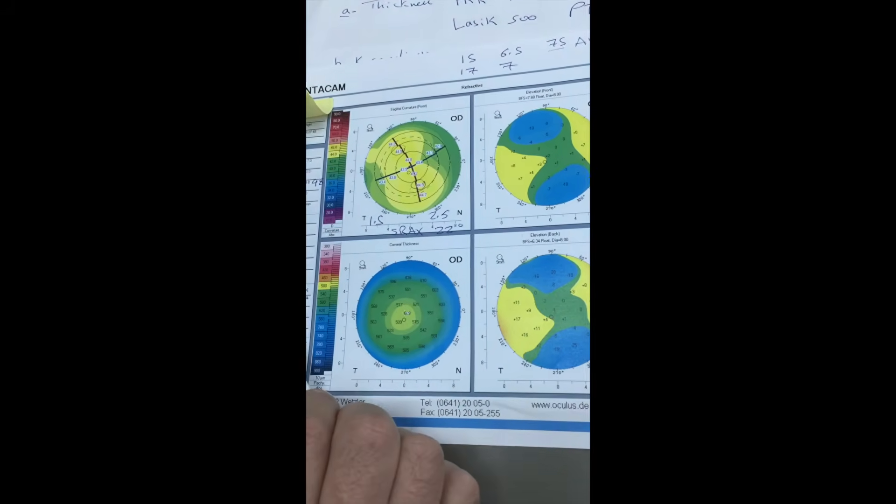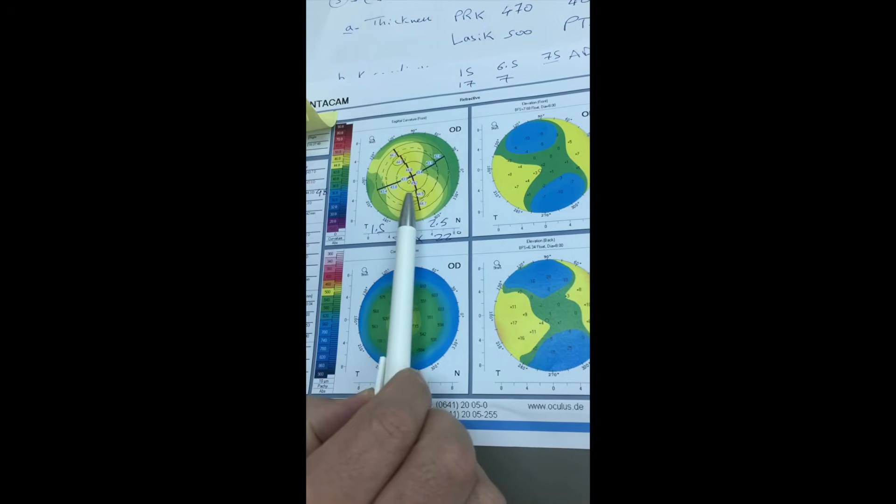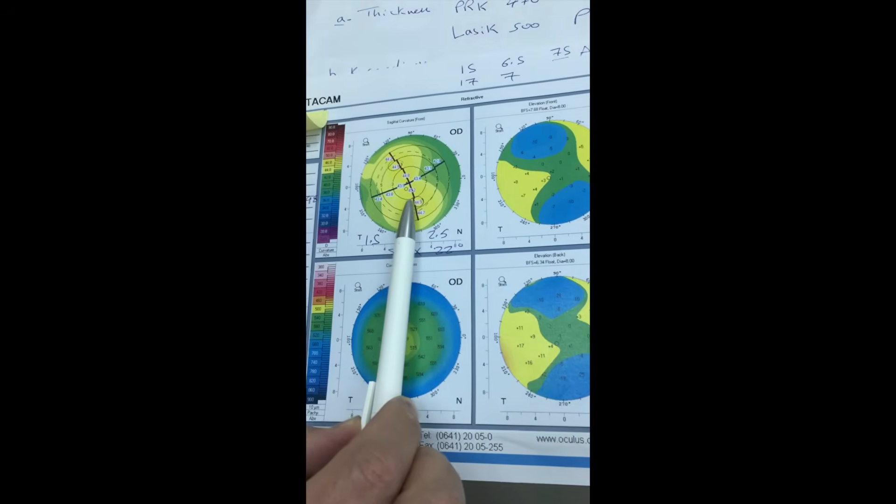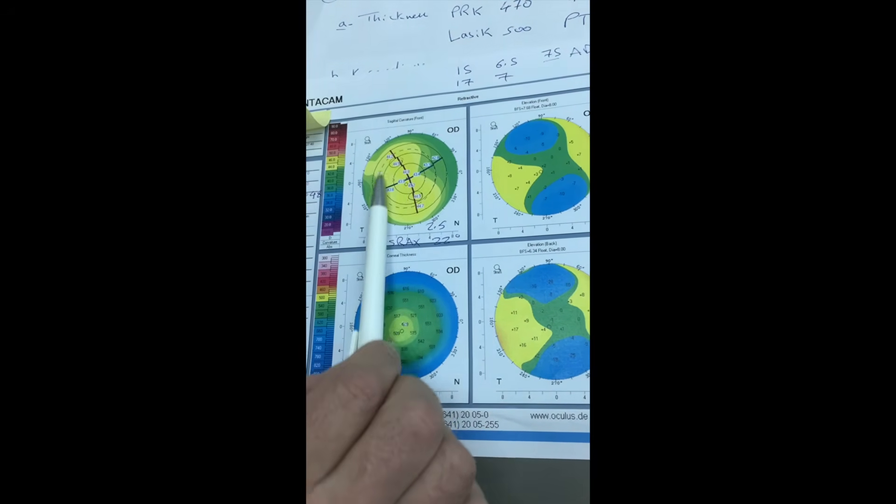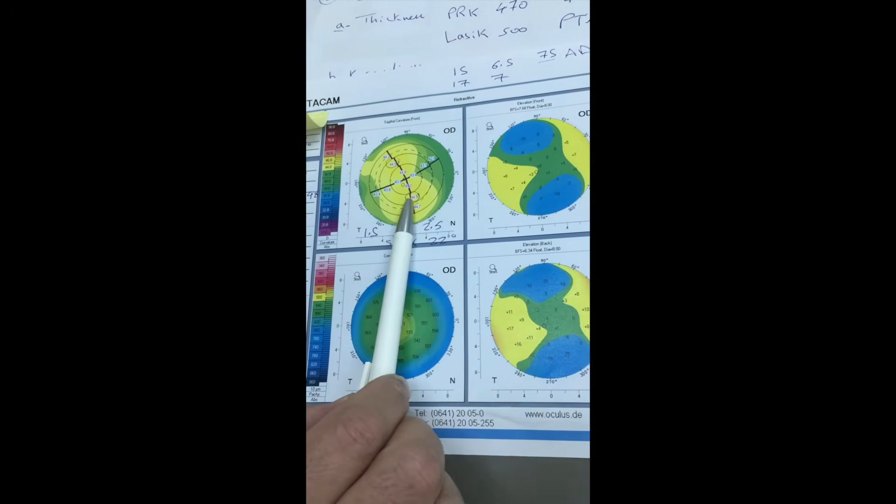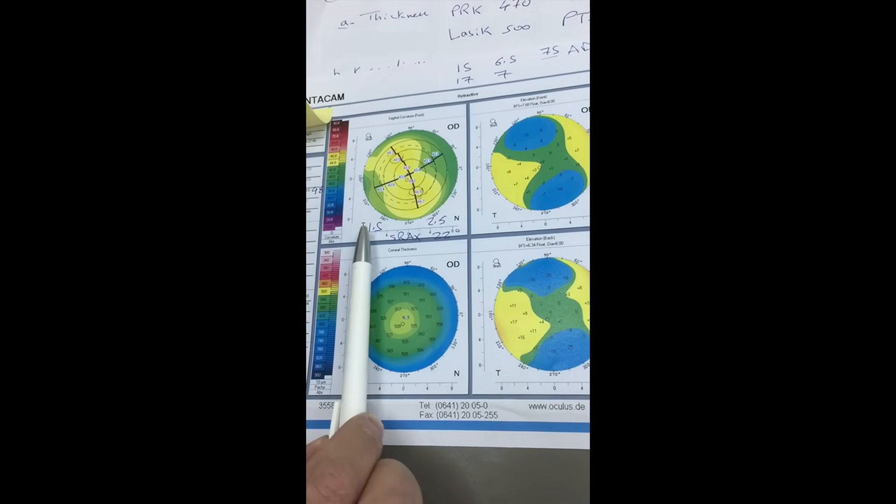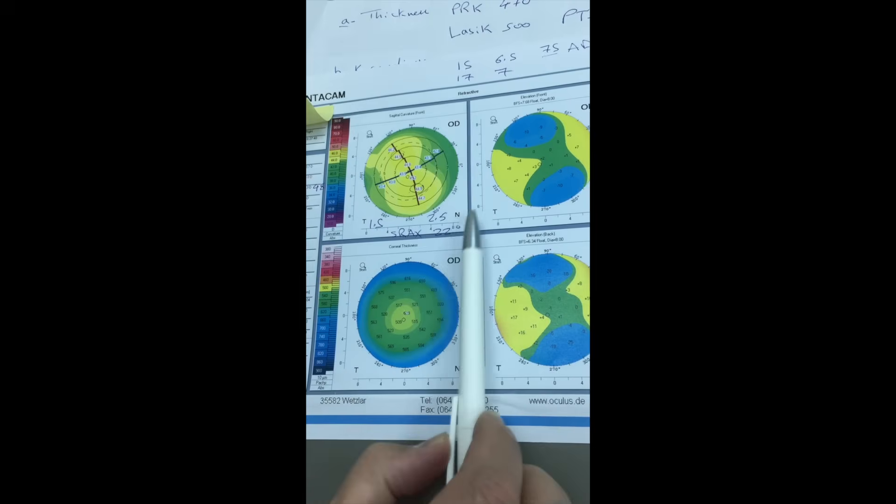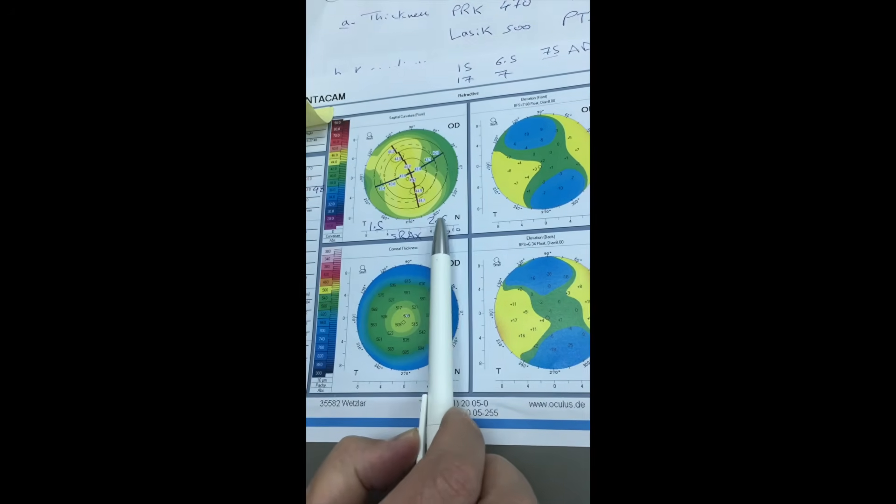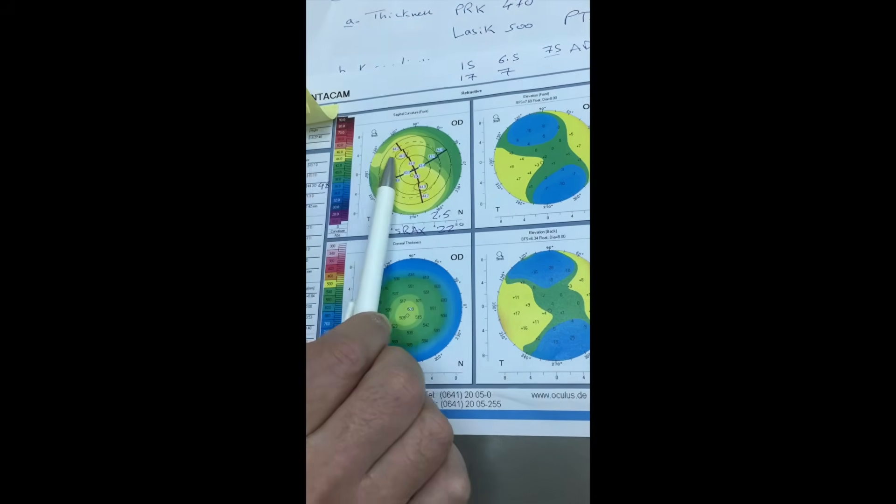Anterior sagittal curvature map. We have two things to look at. The first one is the difference between the inferior and superior, the two opposing points on the second circle of numbers on the steep axis, this one and this one. The cutoff point is 1.5 diopters when the inferior value is larger and the cutoff point is 2.5 diopters when the superior value is larger.